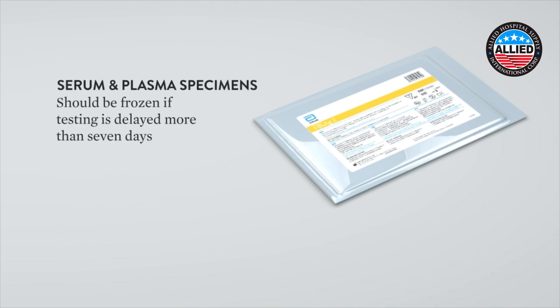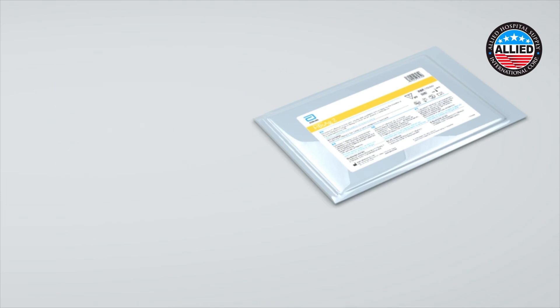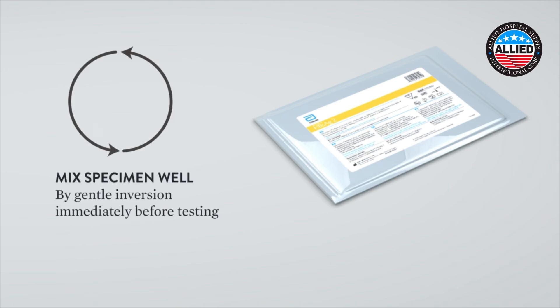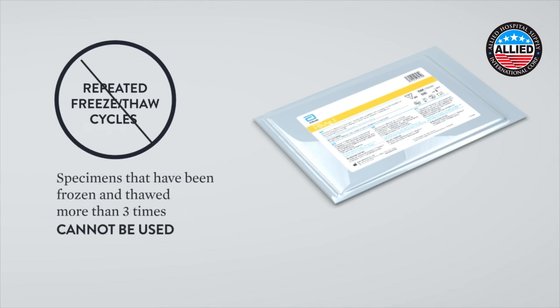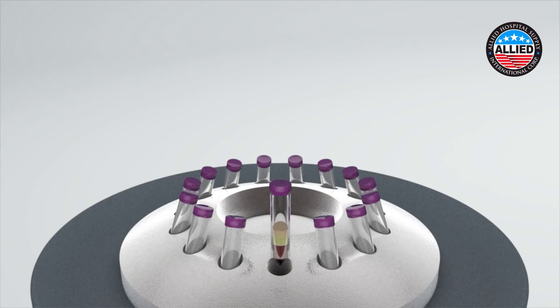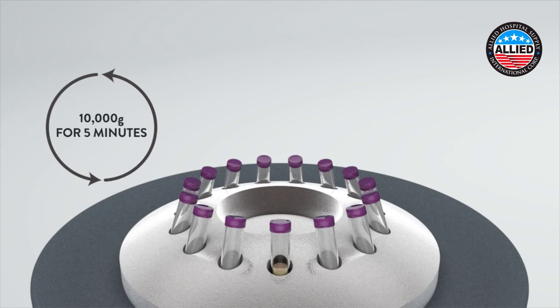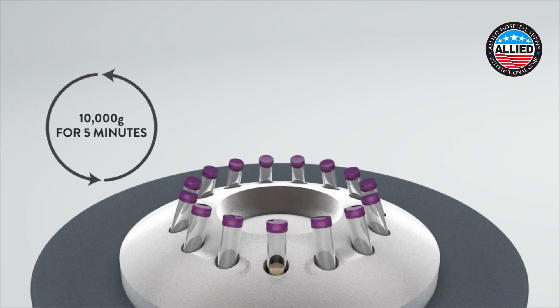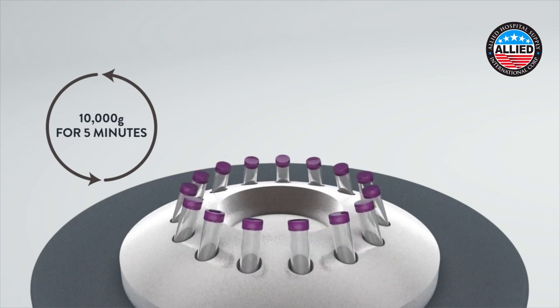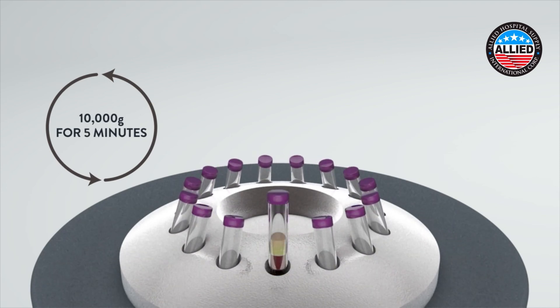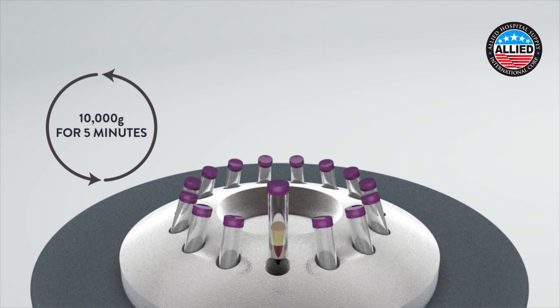If testing is delayed more than 7 days, the specimen should be frozen at negative 20 degrees Celsius or colder. Mix specimen well by gentle inversion of the tube immediately before testing. Avoid repeated freeze and thaw cycles. If serum or plasma specimens show particulate matter or turbidity, specimens must be centrifuged at 10,000 G for 5 minutes at room temperature before sampling.